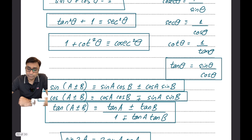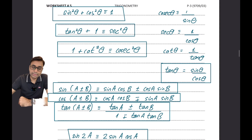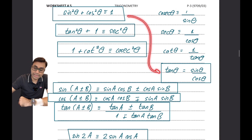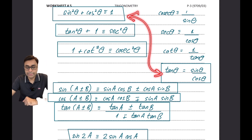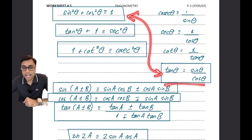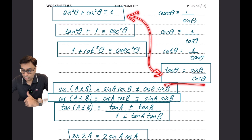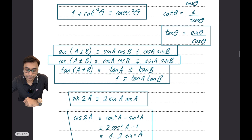There are only two trigonometric identities you were supposed to use in AS math: sin²θ + cos²θ = 1, and tan θ = sin θ / cos θ. Both will be given to you in the formula sheet.